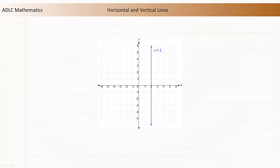Similarly, the equation of this line is x equals 2, because each x-coordinate is 2. Any vertical line can be represented by x equals a constant.